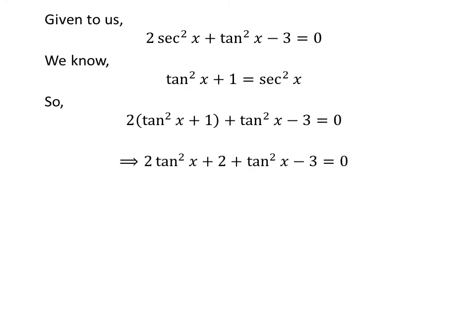Straight multiplication gives us 2 times square of tangent of x plus 2 plus square of tangent of x minus 3 is equal to 0. Addition of like terms gives us 3 times square of tangent of x minus 1 is equal to 0.